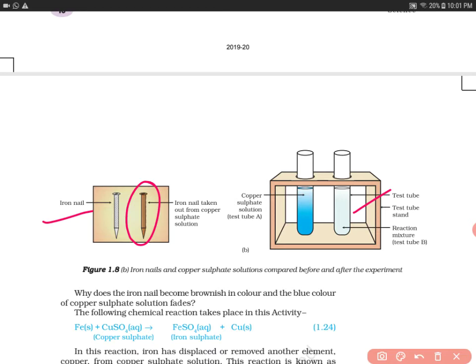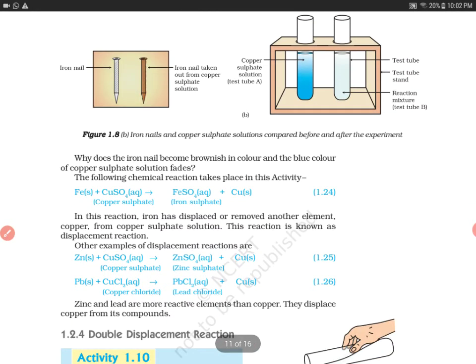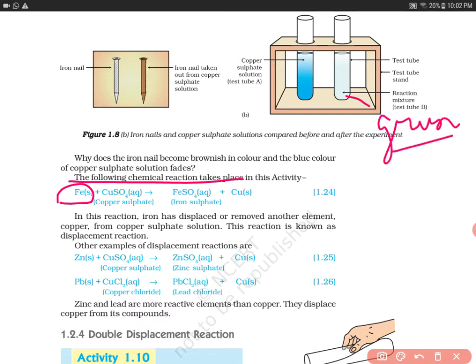The copper sulfate solution in test tube B has faded in color. This is because a chemical reaction has occurred. When iron is added to copper sulfate solution, the product formed is ferrous sulfate, whose color is green. Ferrous sulfate is called green vitriol, while copper sulfate is called blue vitriol.